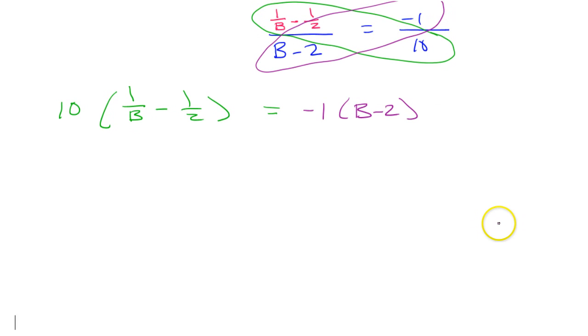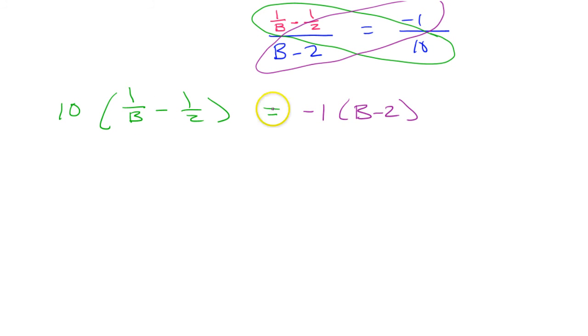So, I no longer have a fraction inside of a fraction. Now I just have regular fractions. So I feel like we're getting closer to a solution. So, if I multiply these fractions by 10, keeping in mind this is 10 over 1, as I distribute this 10, I'm going to wind up multiplying by 10 here and here. The 10 is just going to the numerators. Because this is like 10 over 1. I'm multiplying the numerators by 10. So after I distribute this 10 throughout, then I'm going to wind up with 10 over b minus 10 over 2. I'm going to distribute this negative 1 as well. So that's going to give me negative b plus 2.